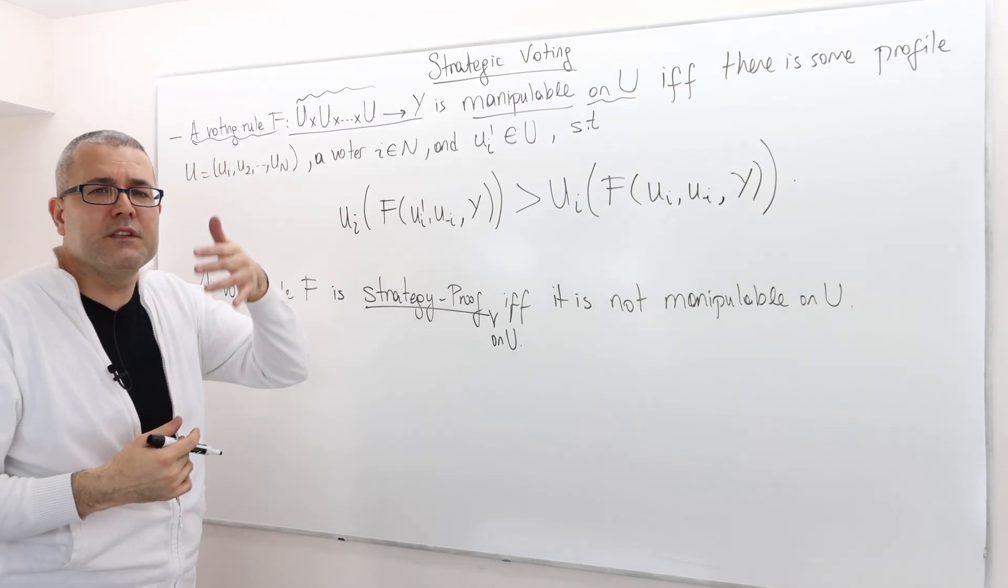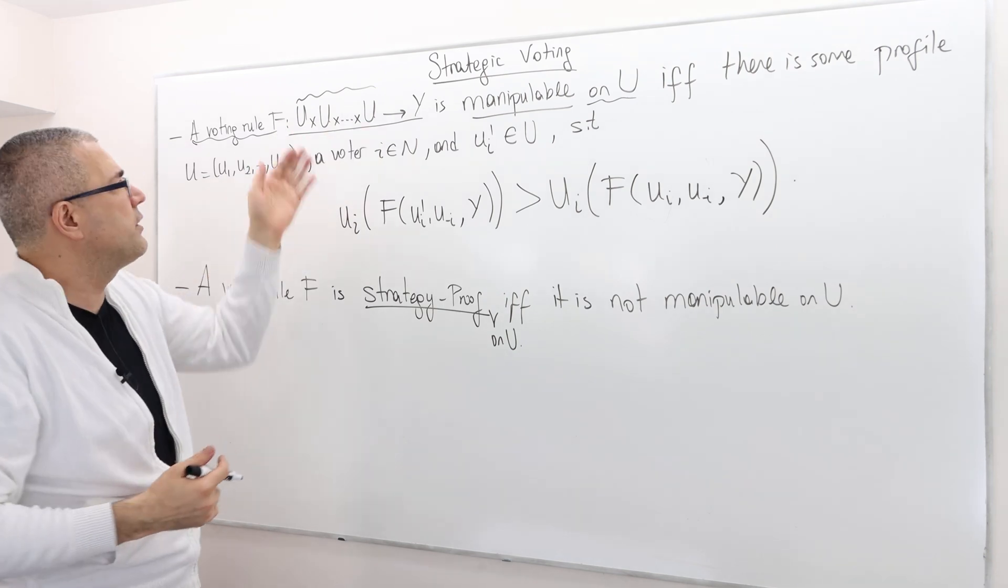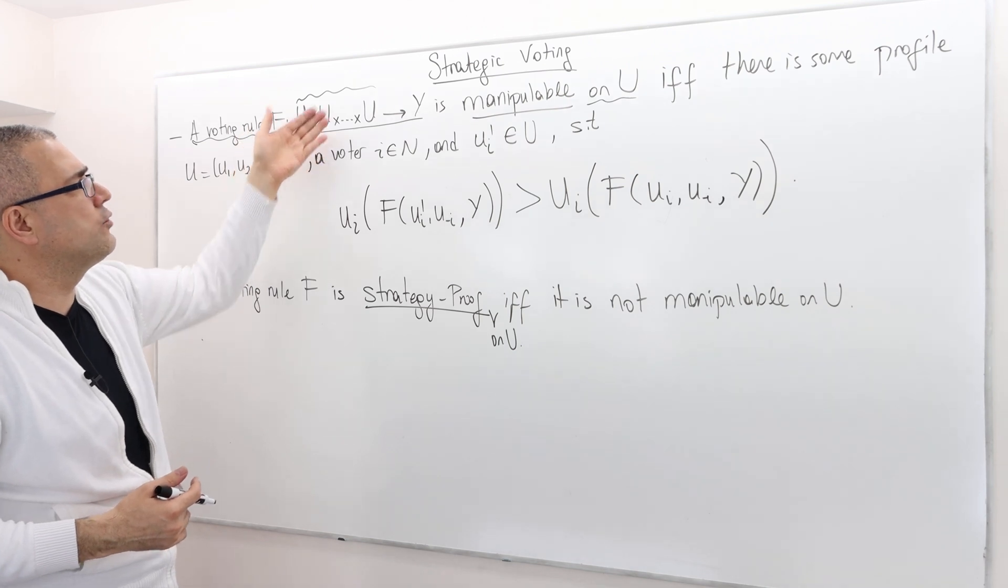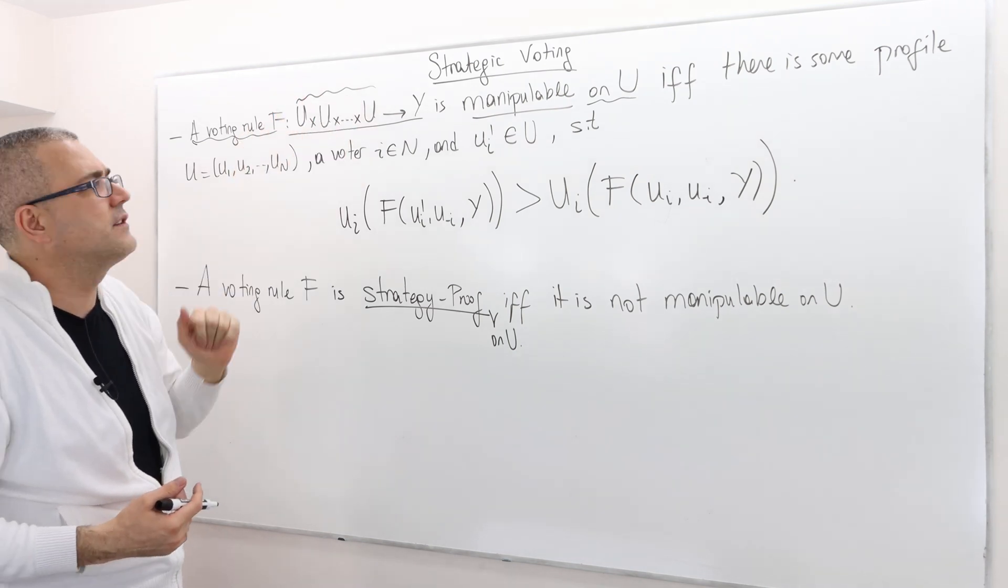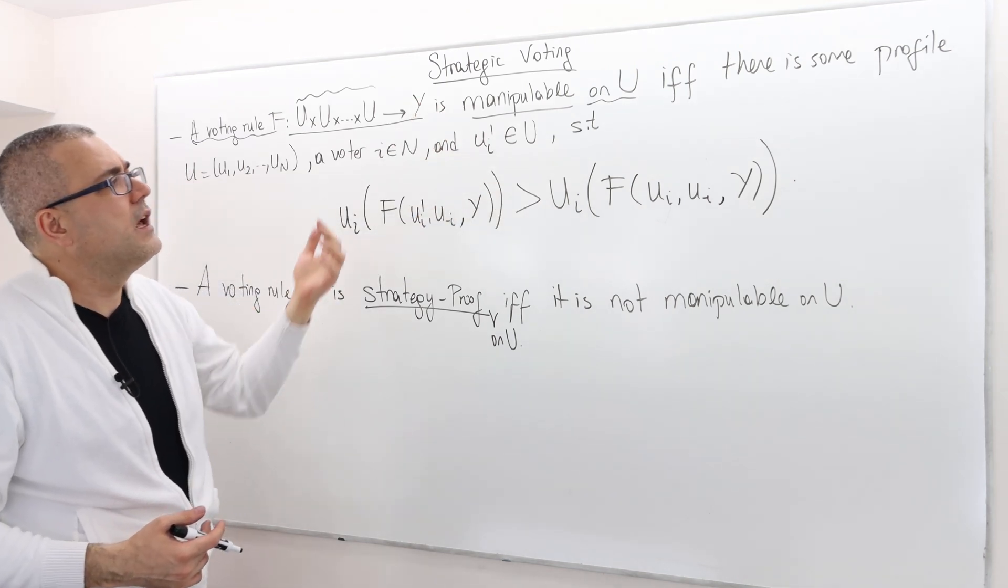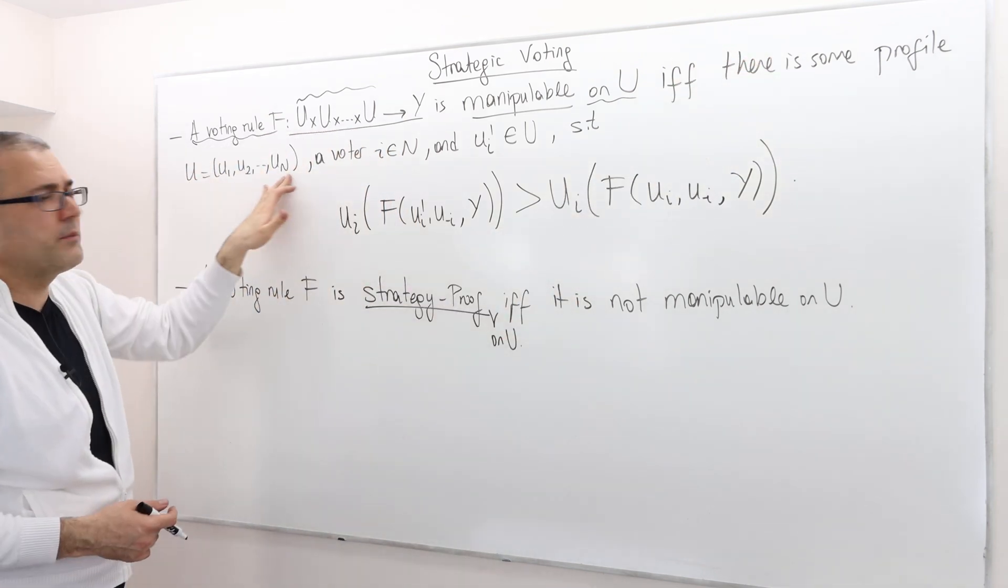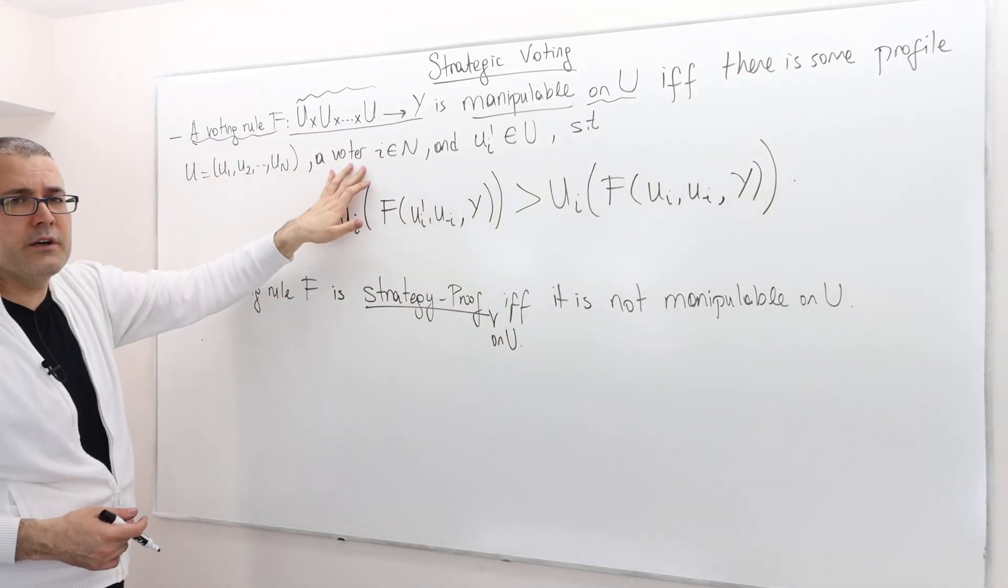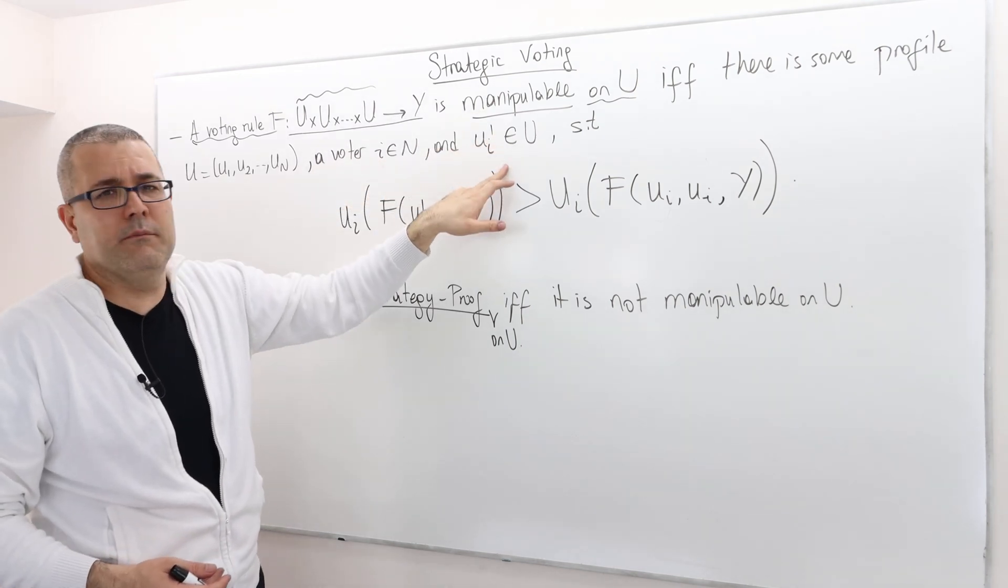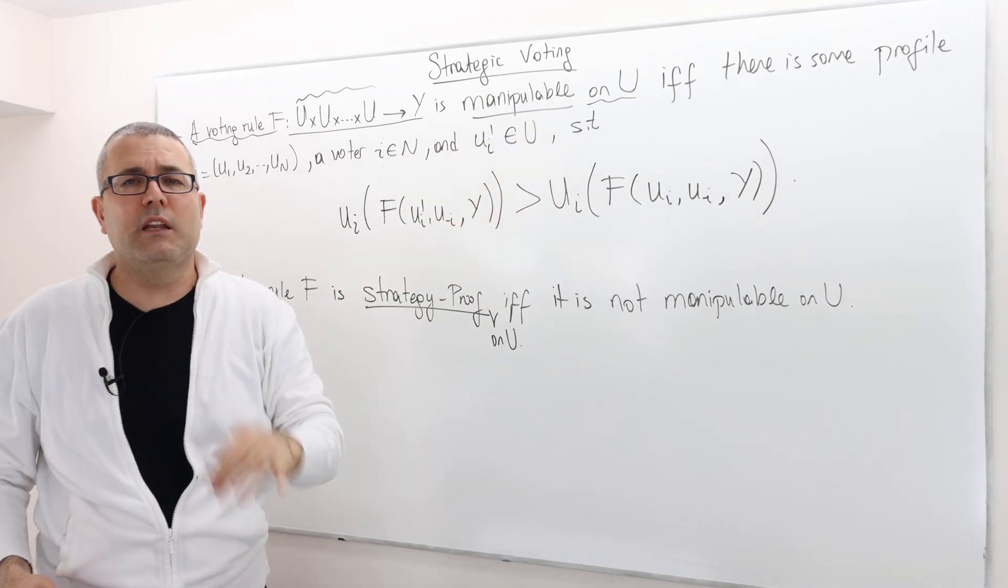So U is the preference domain for an individual. So here I take the cross product because remember there are N individuals. So preference of individual 1, individual 2 or voter 2, voter N, etc. If and only if, remember all definitions are if and only if statement, there exists some preference profile U, remember it's a vector, a voter I and a preference U I prime in this domain such that this inequality holds.